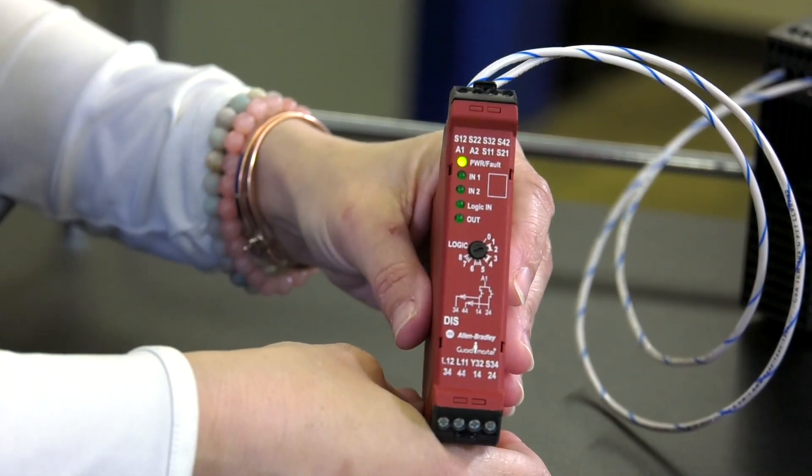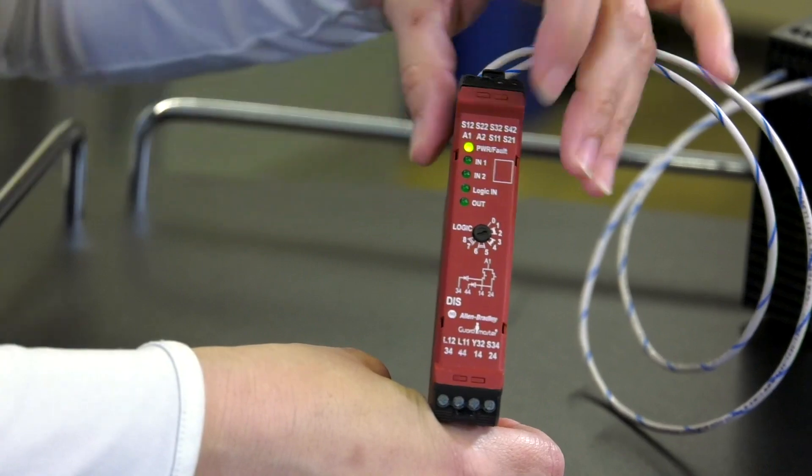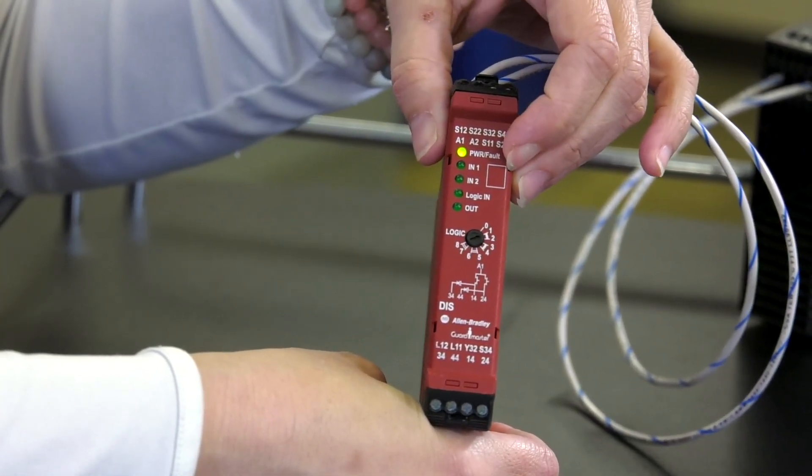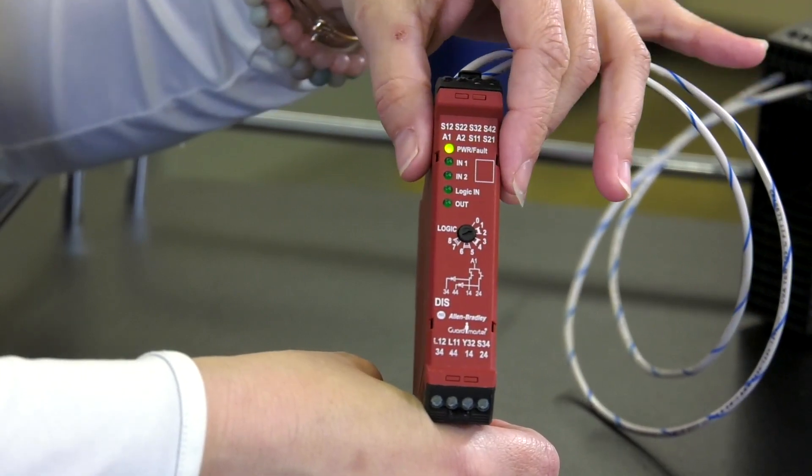So once the configuration is set, then you just want to confirm that that is actually what you want, and then you can write the configuration in a spot there, so if somebody turns the dial, you actually know what the original configuration was set for.